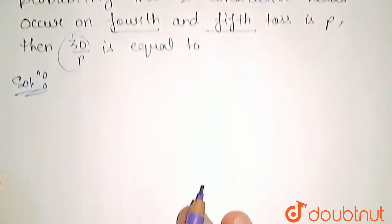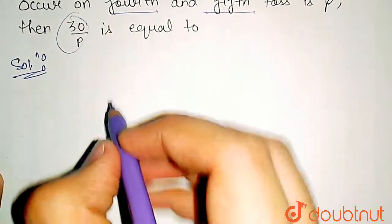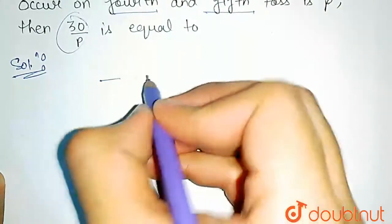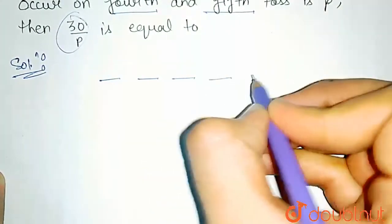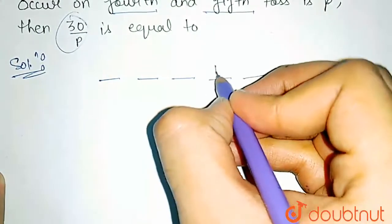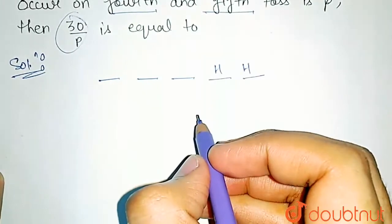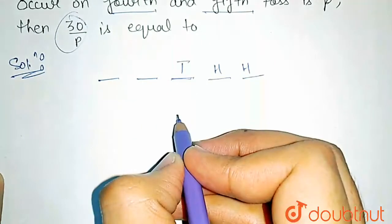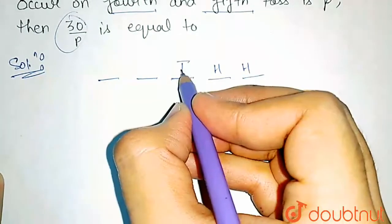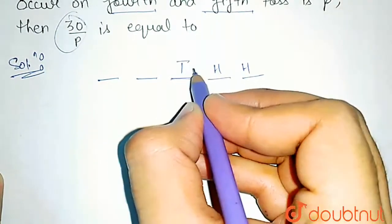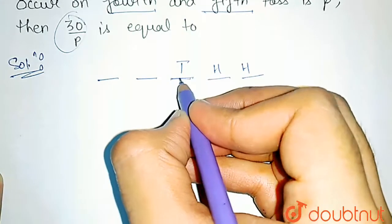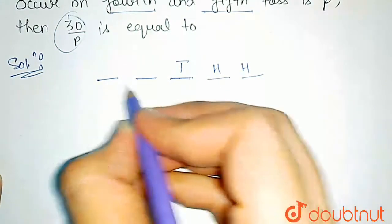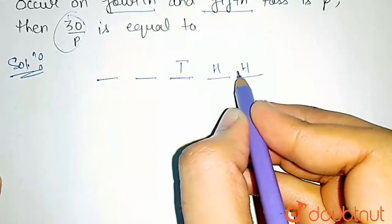A fair coin is tossed repeatedly and the two consecutive heads occur at the fourth and fifth position. So two heads occur at these positions. If we talk about the third position, there would be a tail — because if a head occurred there, two consecutive heads would be possible on the third and fourth position, but that is not the case. So these three values are fixed.